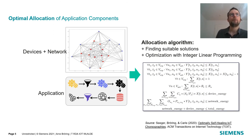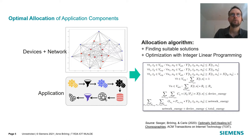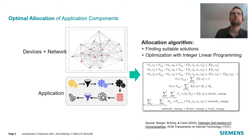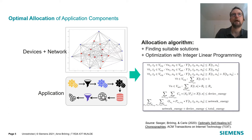To solve this problem, we have formulated a mathematical optimization problem using integer linear programming. You see an excerpt of this algorithm here on the right. The algorithm receives two models: one represents the device and network infrastructure, and the other represents the application. These are handed over to a solver to derive optimality. A fundamental constraint is that each application component should be allocated to one device and the resource requirements should not exceed the device's resources. This is a form of quadratic assignment problem and thus NP-hard, so we had to come up with a heuristic to reduce it to a non-quadratic assignment problem that can be solved faster.